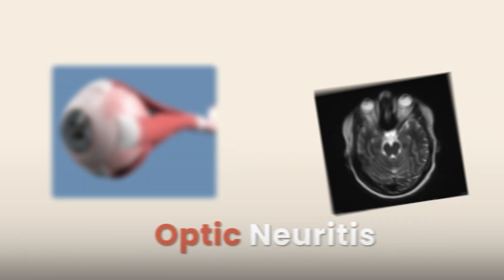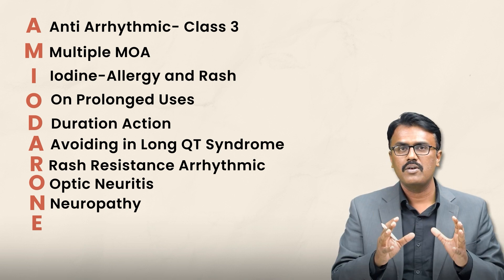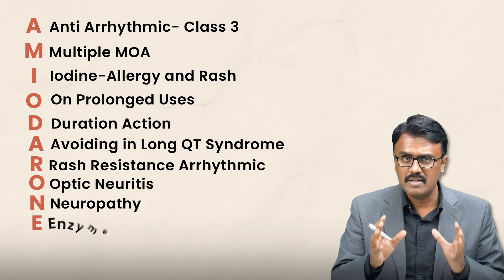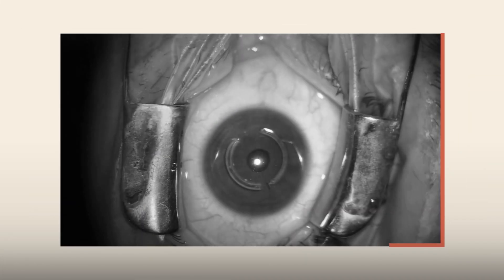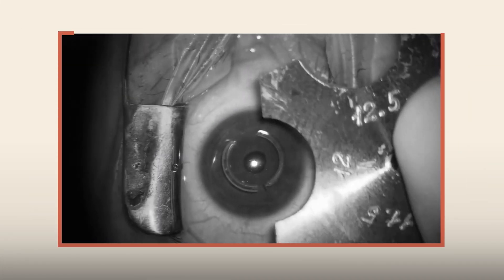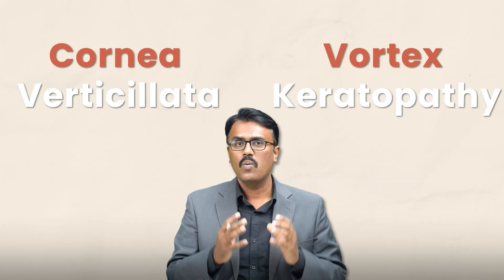O for the eye — it can cause optic neuritis. Then E — very important — Amiodarone is an enzyme inhibitor. When a patient is exposed to light, there is photosensitivity that can lead to blue man syndrome. It can also cause corneal deposits, also called vortex keratopathy.